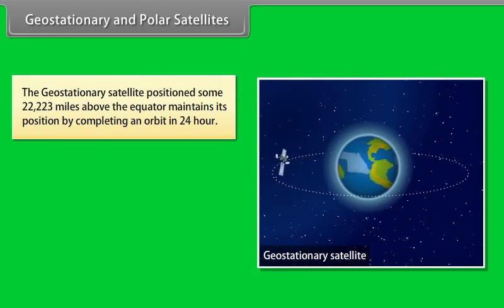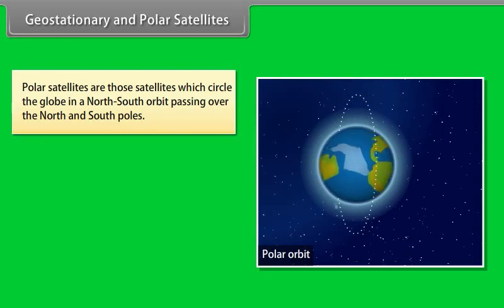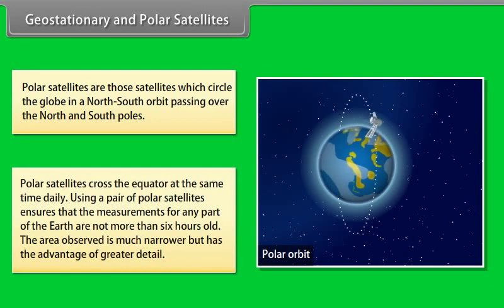Geostationary and Polar Satellites. The geostationary satellite positioned some 22,223 miles above the equator maintains its position by completing an orbit in 24 hour. The long range view of the same area helps meteorologists to monitor, analyze and predict weather patterns. However, in order to fully understand the Earth's atmosphere the entire planet must be monitored. Polar Satellites are those satellites which circle the globe in a north-south orbit passing over the north and south poles. Polar Satellites cross the equator at the same time daily. Using a pair of Polar Satellites ensures that the measurements for any part of the Earth are not more than 6 hours old. The area observed is much narrower but has the advantage of greater detail.